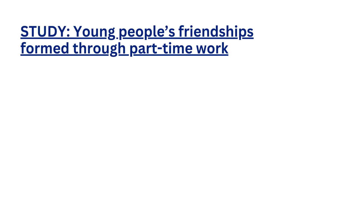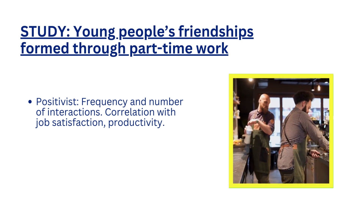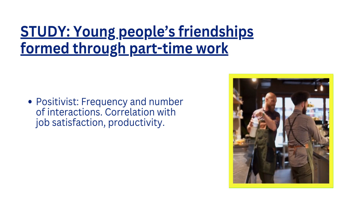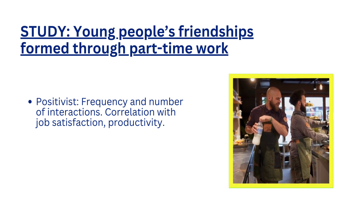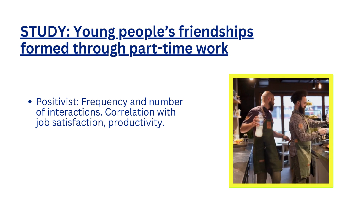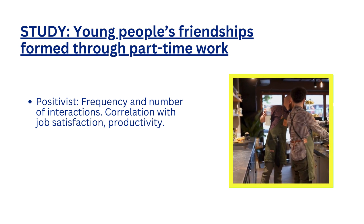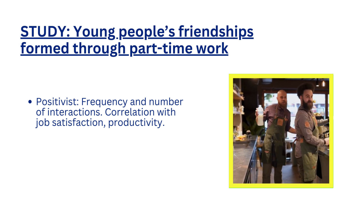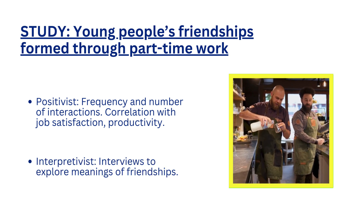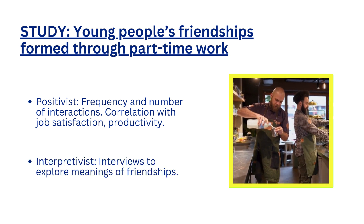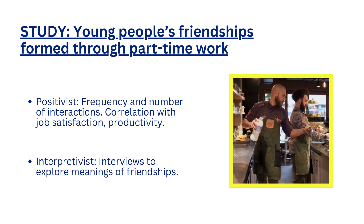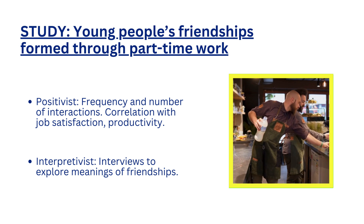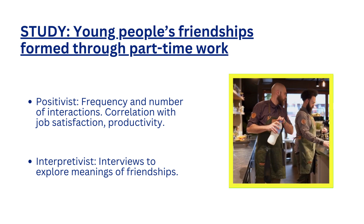Let's take an example: say you're doing a study about young people's friendships formed through part-time work. If you take a positivist approach, you might analyze the frequency of interactions between co-workers and examine whether those interactions correlate with job satisfaction or productivity. If you take an interpretivist approach, you might conduct in-depth interviews with young people to explore what those friendships and relationships mean to them.